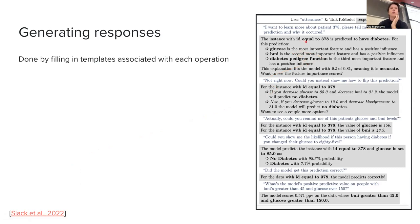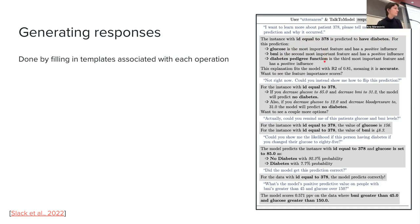Here you see these templates are very structured — everything in bold is what's example-specific. So the utterance is 'I want to learn more about patient 378, please tell me the model's prediction and why it occurred.' The answer from the system is 'The instance with ID equal to 378 is predicted to have diabetes. Glucose is the most important feature and has a positive influence. BMI is the second most important feature and has a positive influence,' and so on.